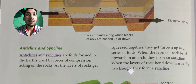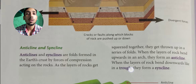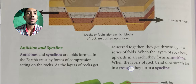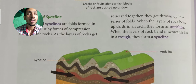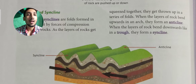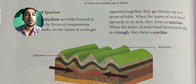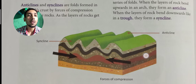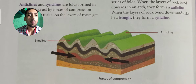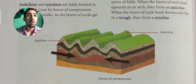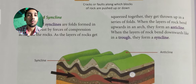Anticlines and synclines are folds formed in the earth's crust by the force of compression acting on the rock. They are zigzag structures mostly present in the earth's crust in certain places. This compression force, shown by the red arrows in the diagram, causes the anticline and syncline formation.